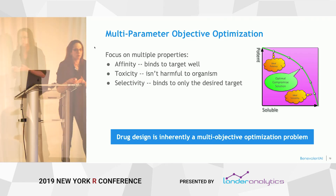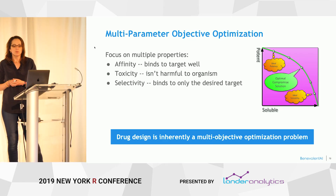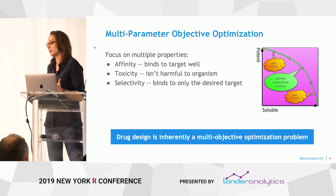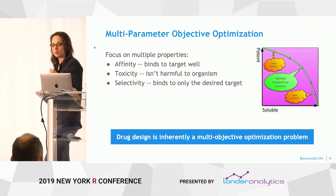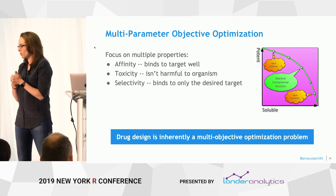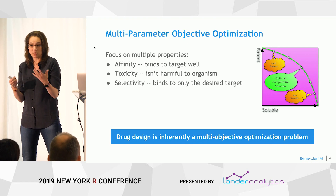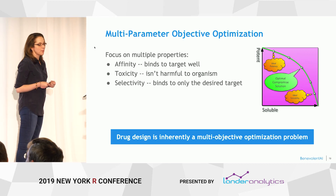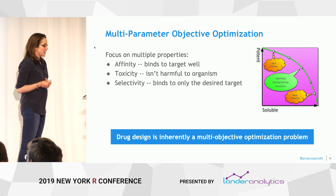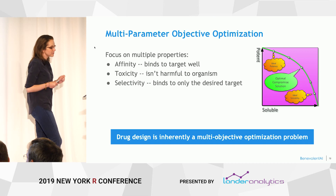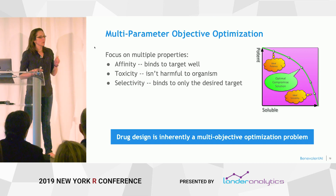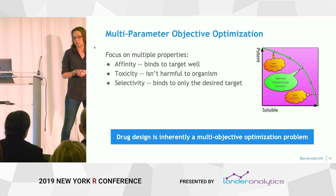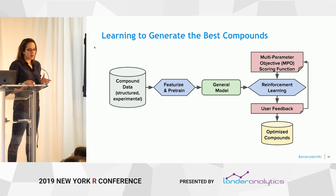Drug discovery is really a multi-parameter optimization problem. We have a lot of properties to think about at once — more than even a great chemist can really keep track of at one time. We want affinity: we want the compound to bind to our target well so that we don't have to use as much of it when we dose people. We want it to not be very toxic, and we don't want to harm the organism. We want it to be selective — we only want it to bind to the target we're interested in. This multi-parameter objective is what we use with our machine learning models.